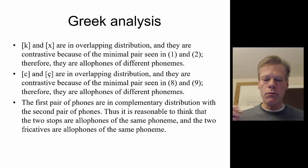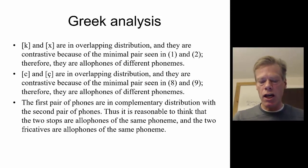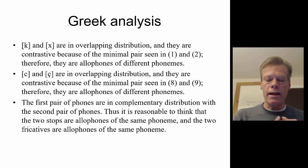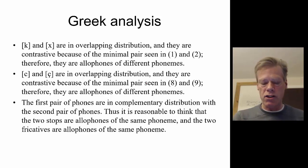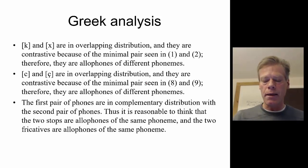The velar stop and palatal stop are in overlapping distribution and are contrasted because of minimal pairs. The velar fricative and palatal fricative are also in overlapping distribution and contrasted by minimal pairs. However, the first pair of phones — the velars — are in complementary distribution with the second pair — the palatals. Thus, it is reasonable to conclude that the two stops are allophones of the same phoneme, and the two fricatives are allophones of the same phoneme.